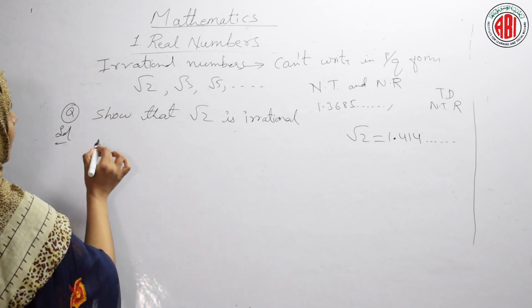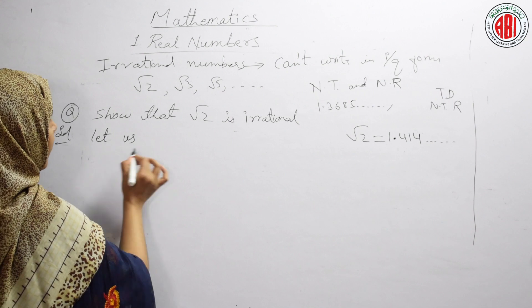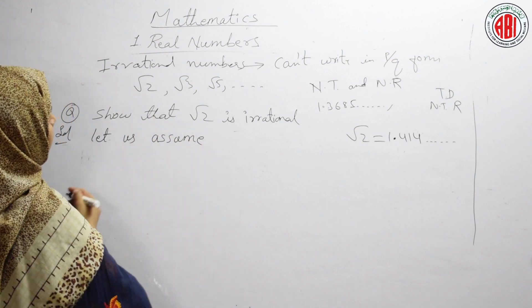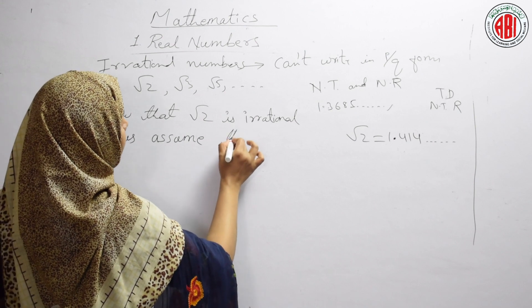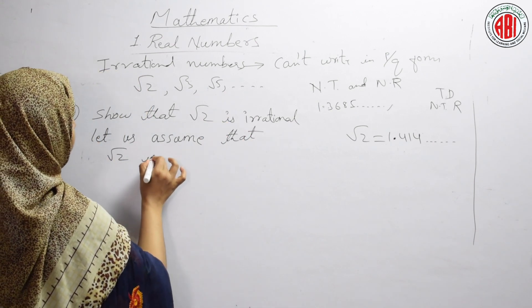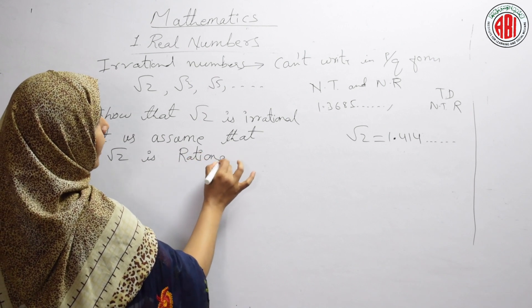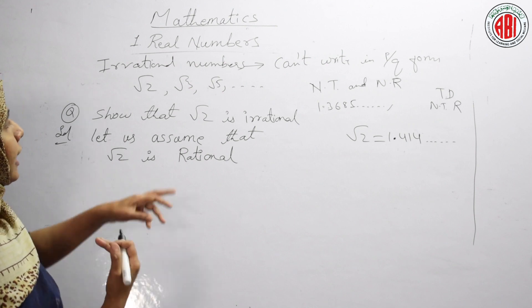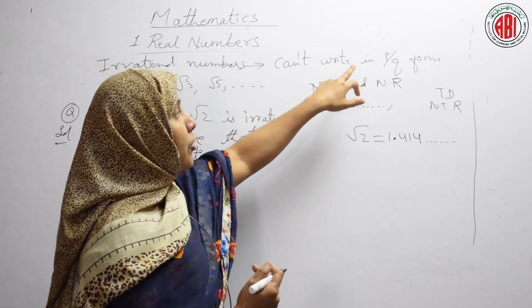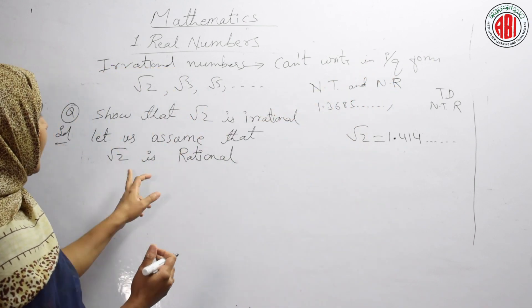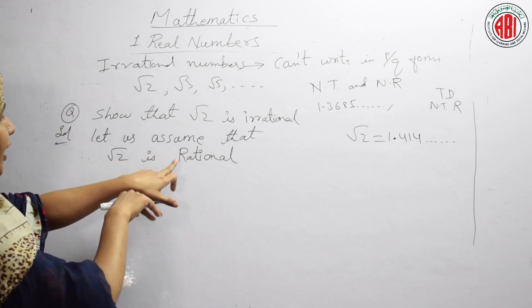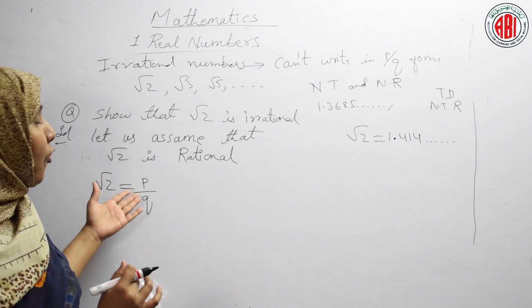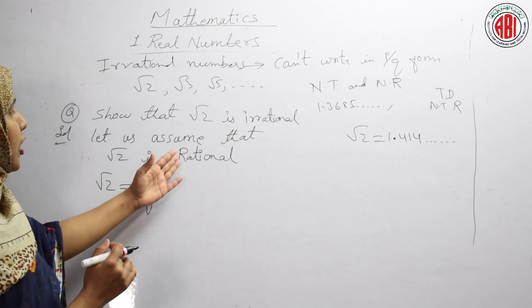To prove √2 is irrational, first we assume the opposite: let us assume that √2 is rational. This is an important question — it can come in the four-mark questions in exams. If it is rational, it should be in the form P/Q. We are assuming it is rational, so we write √2 = P/Q, because we have assumed it is rational.